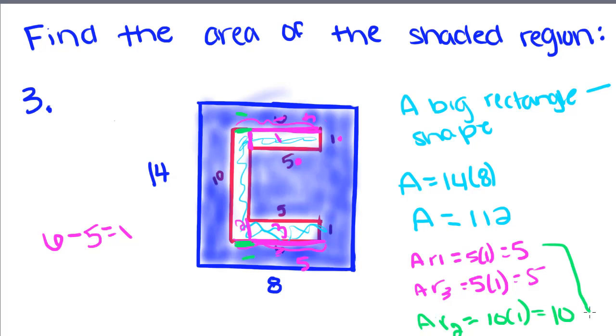So now I'm going to add these all up to get the area of this entire shape inside here. So I'm going to get 5 plus 5 is 10, plus 10 is 20. So the area of the shape is 20.